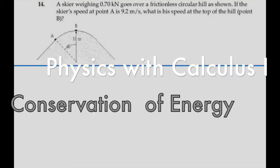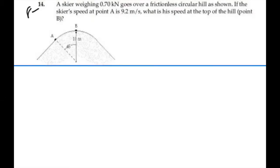Here's problem 814. A skier weighing 0.7 kN goes over a frictionless circular hill as shown. If the skier's speed at point A is 9.2 meters per second, what is the speed at the top of the hill, point B?